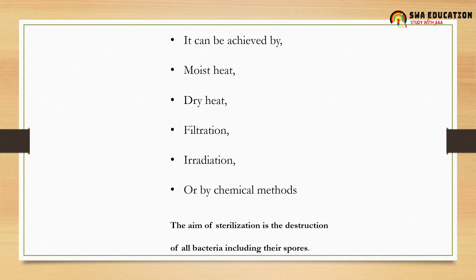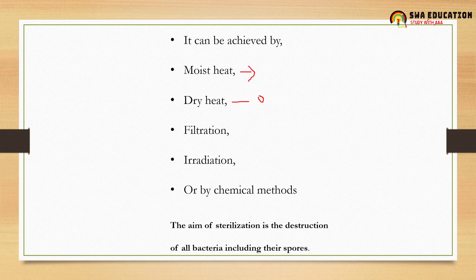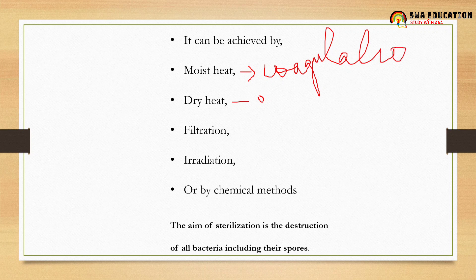Sterilization can be achieved by moist heat, dry heat, filtration, irradiation, or by chemicals. When microbes are killed by dry heat, this is due to oxidation. When microorganisms are killed by moist heat, it is done by coagulation.